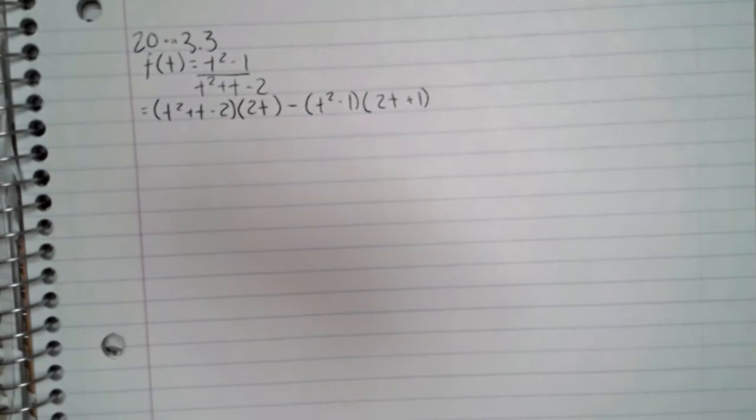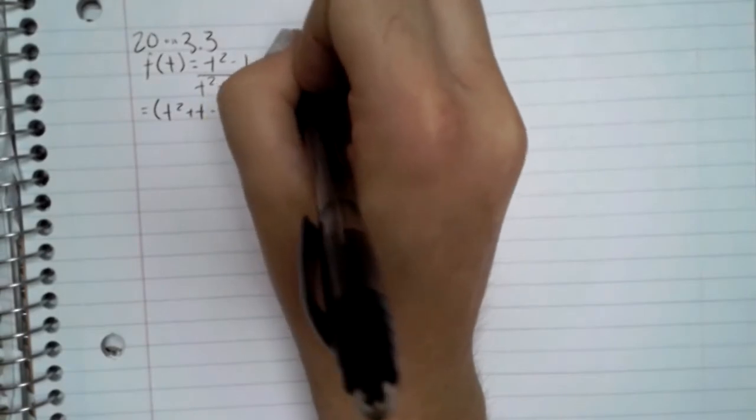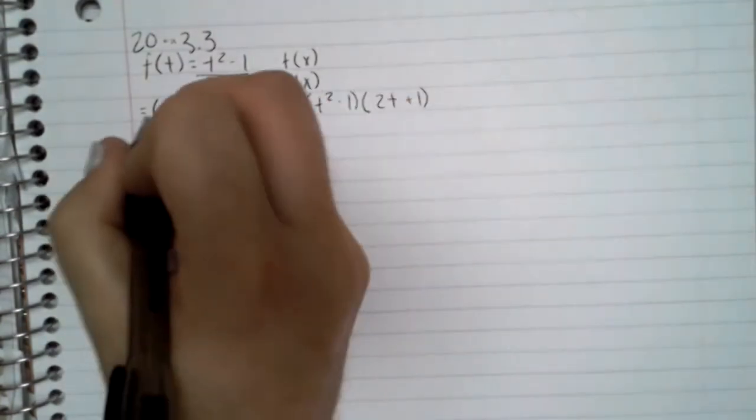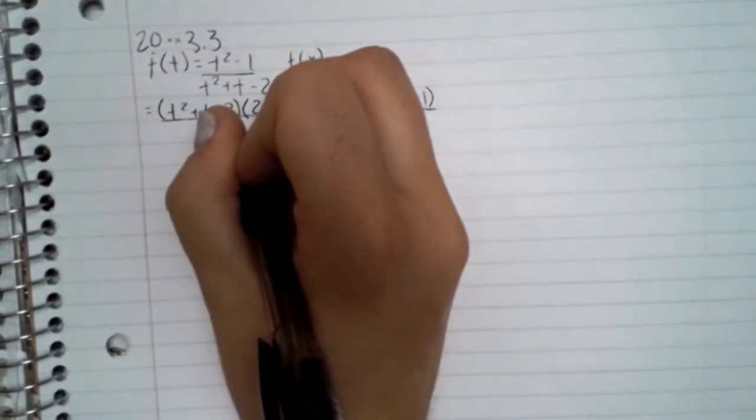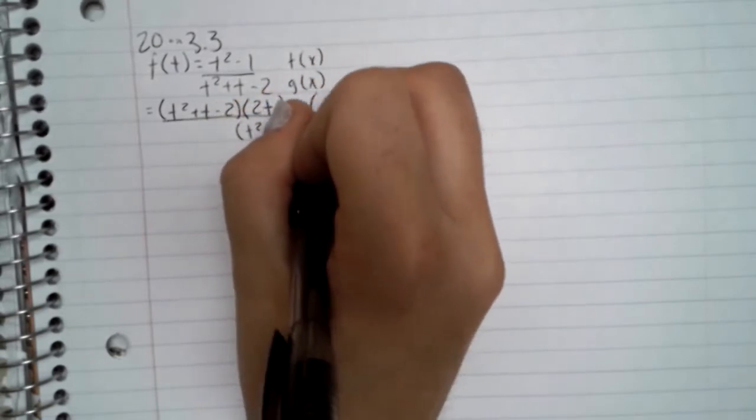So f of x is what we're calling the numerator and g of x... yes. And then that is all over g of x squared, so t squared plus t minus 2.